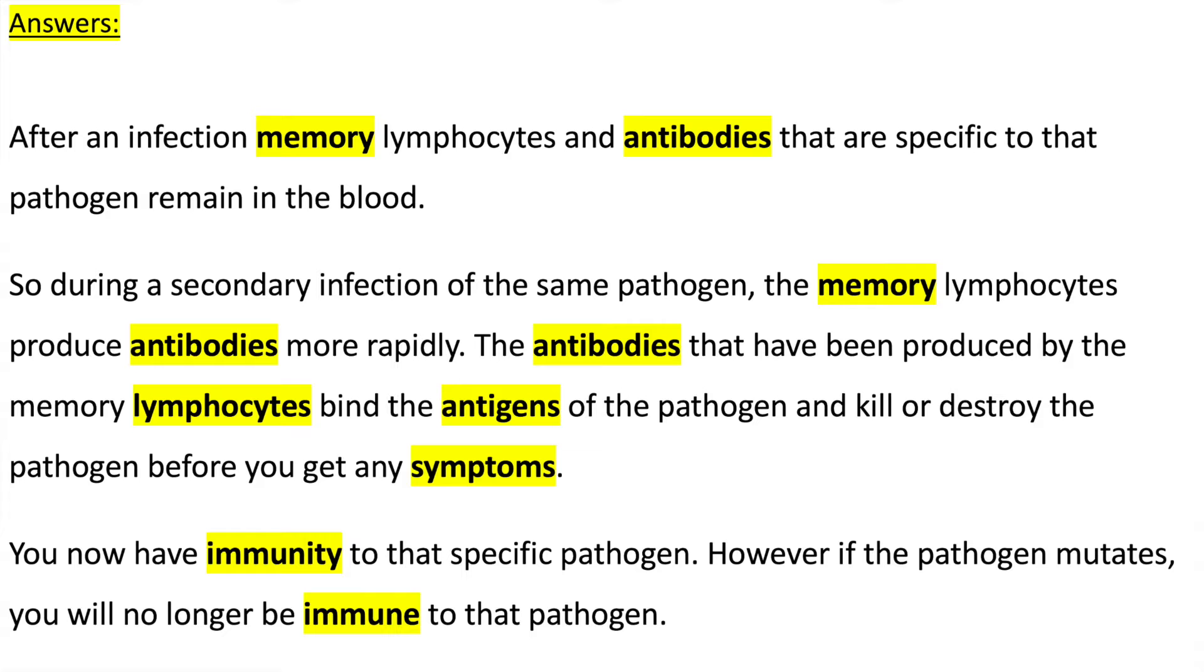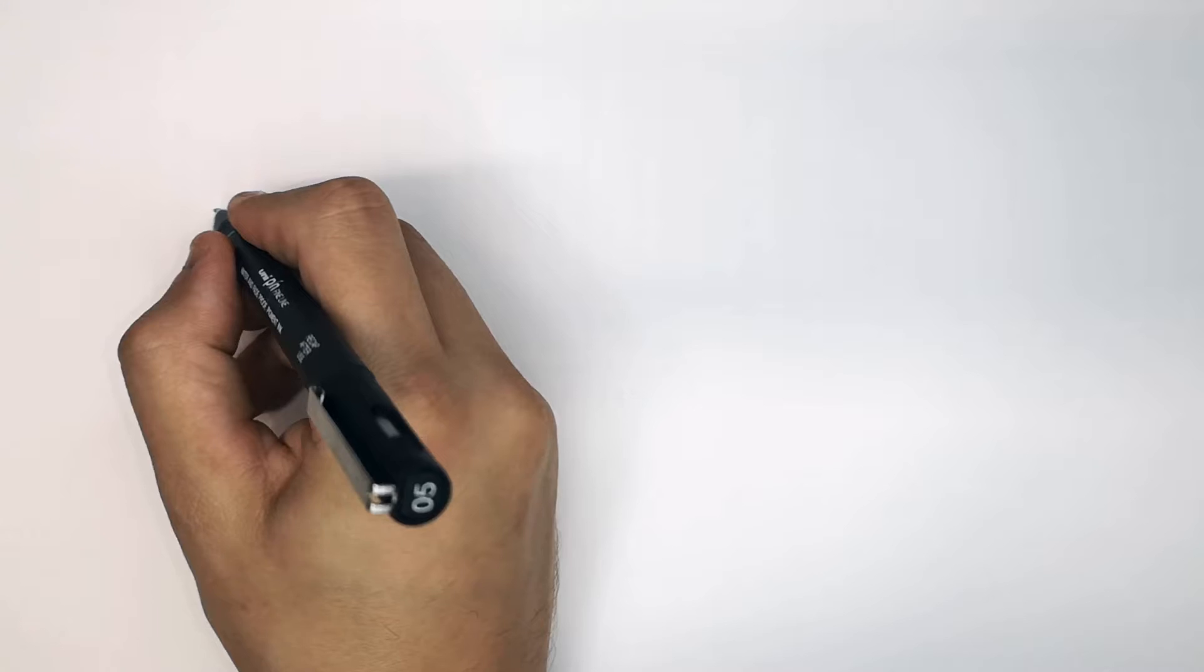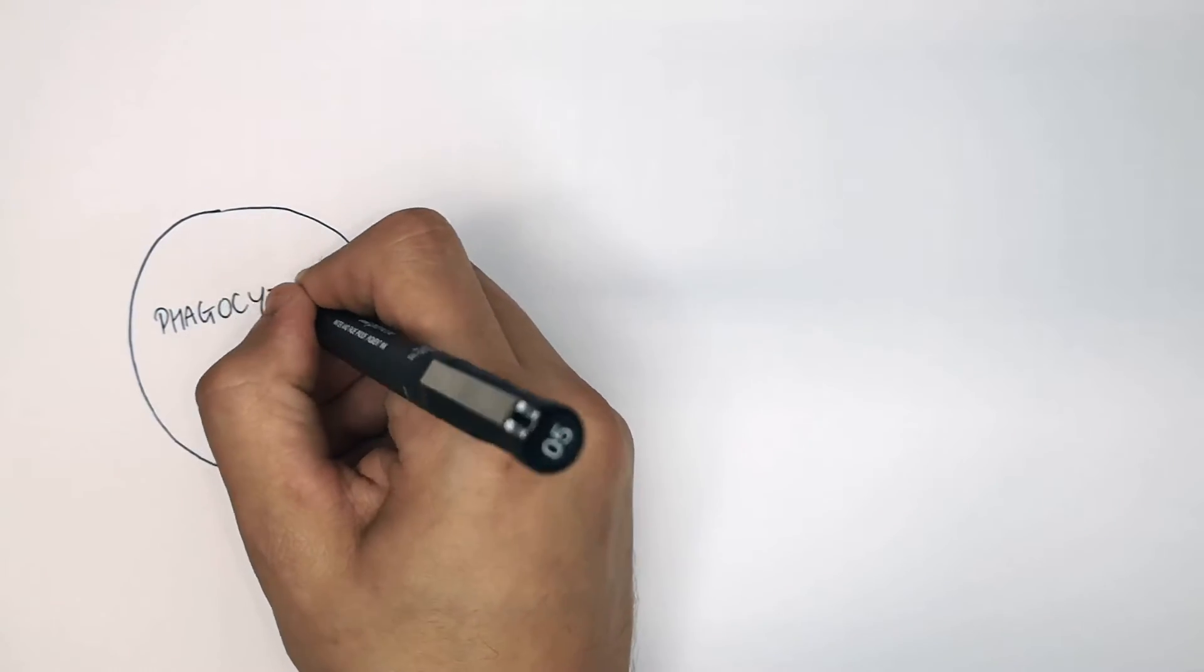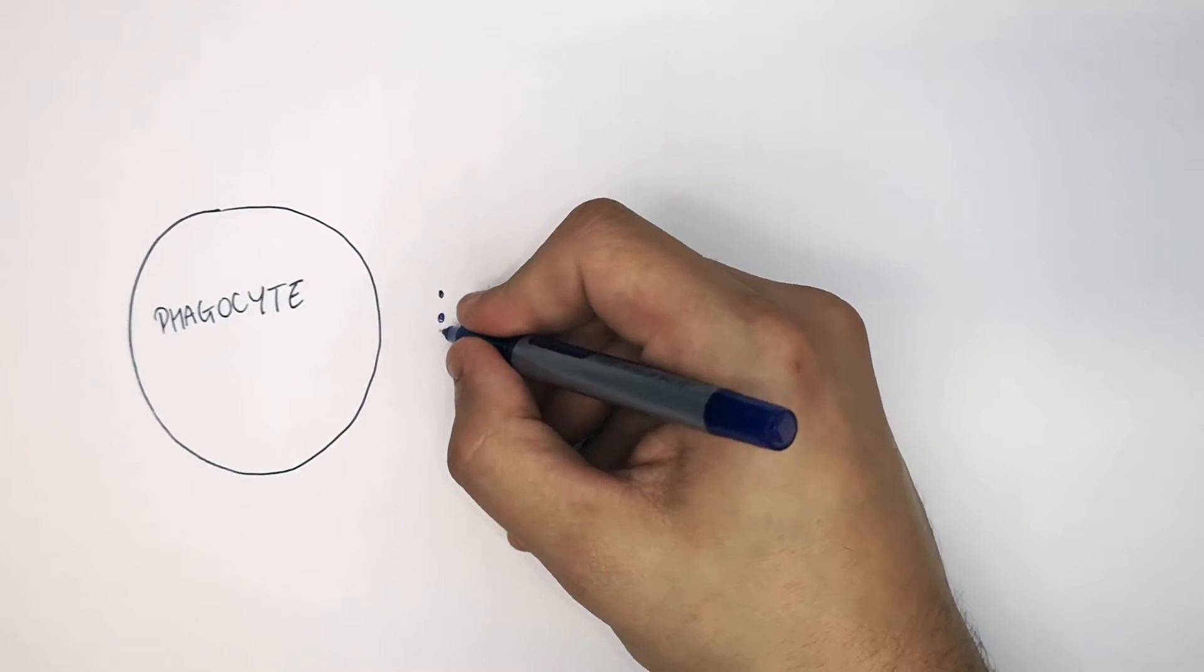It's question time. Lymphocytes exist inside the blood, which we've talked about previously. We're now going to talk about phagocytes.